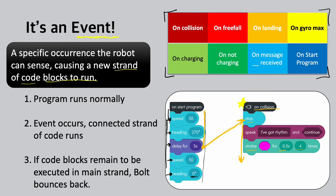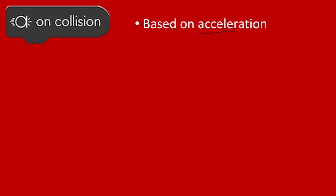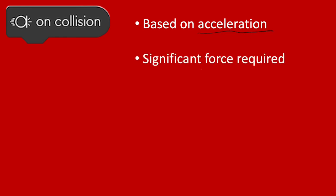One cool thing is that if there's still code to run after the event triggered — say it bounced at the delay step — once all the event code has been run through, it comes back to the main strand of code and completes it. That gets complicated depending on whether the event code loops or continues. The on-collision event is really common to use — it's based on acceleration. If you clap the robot in your hands, drop it on a table, or it runs into a wall, it triggers on-collision. However, significant force is required; I've been disappointed before when a gentle bump doesn't trigger it.